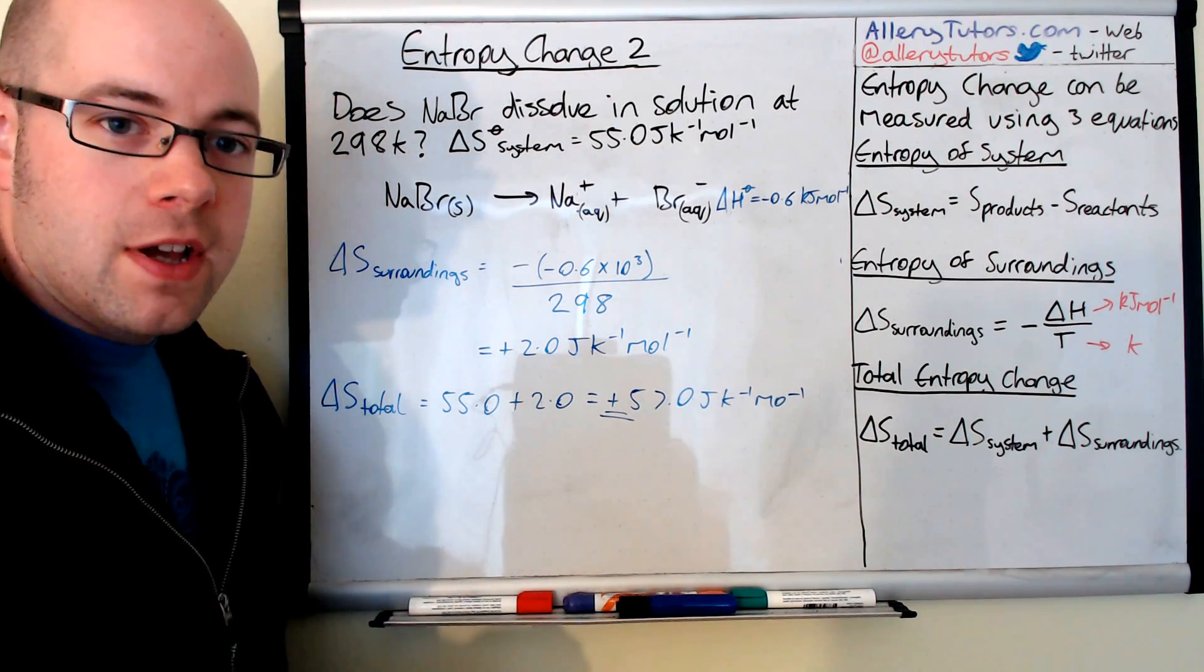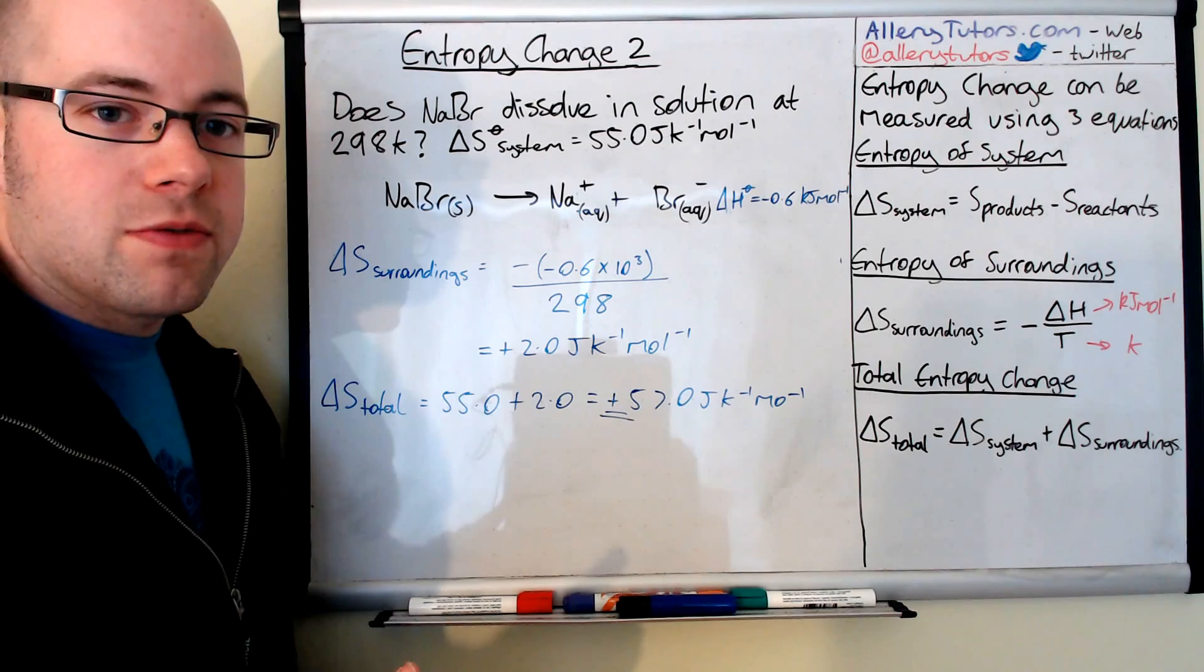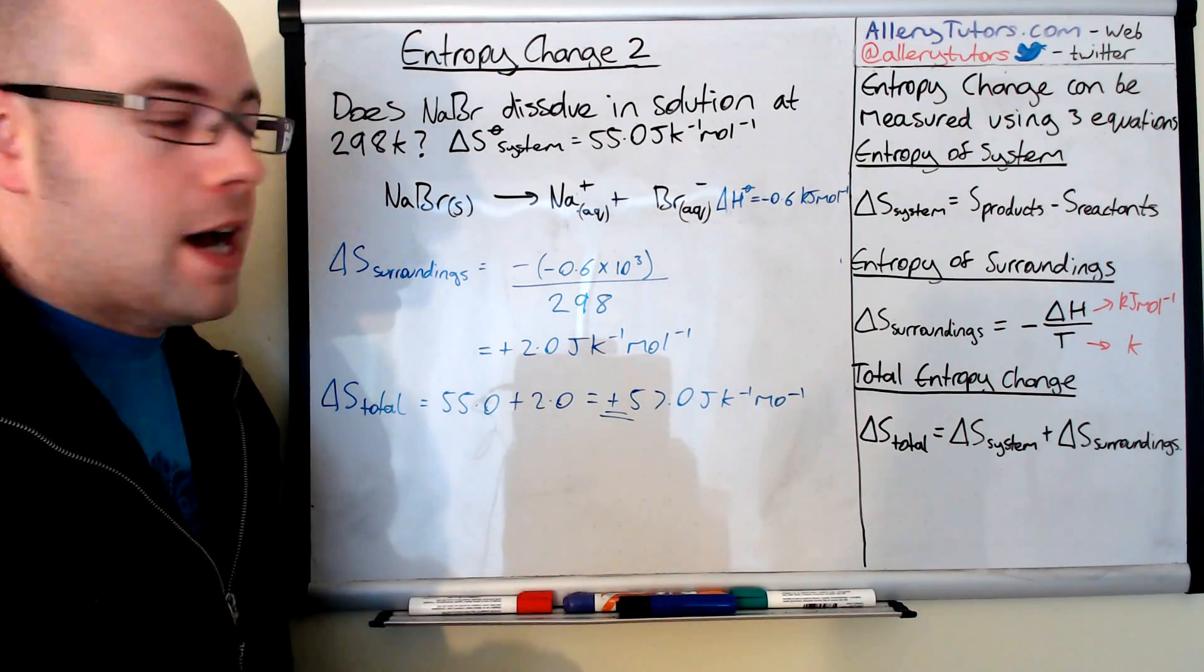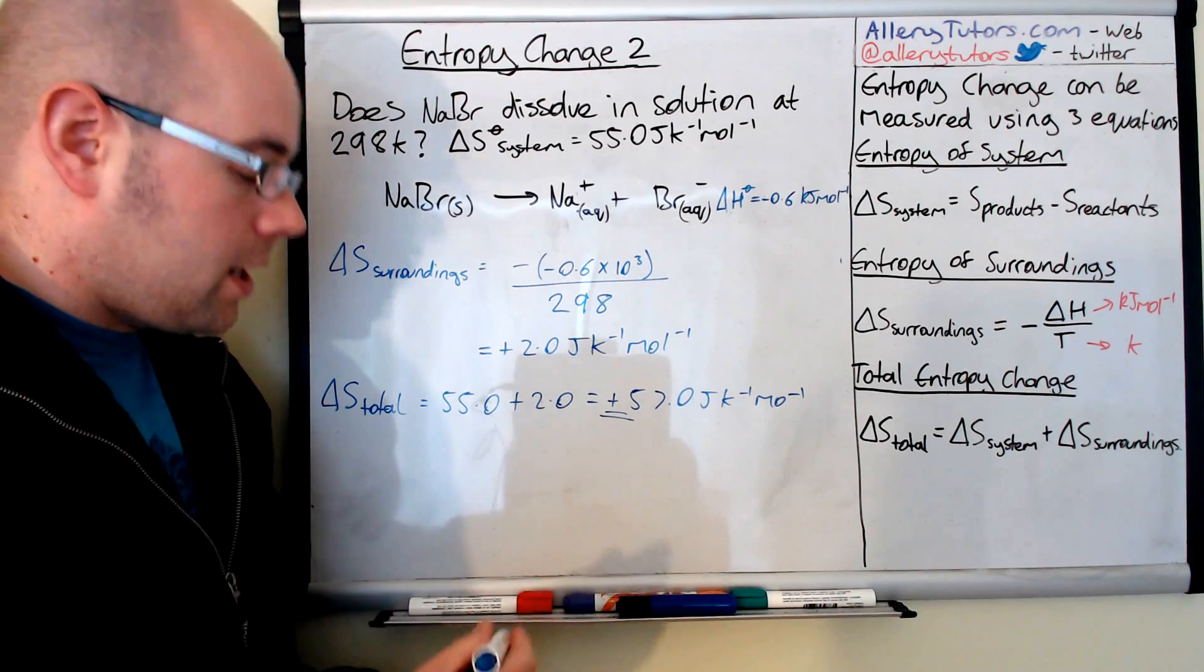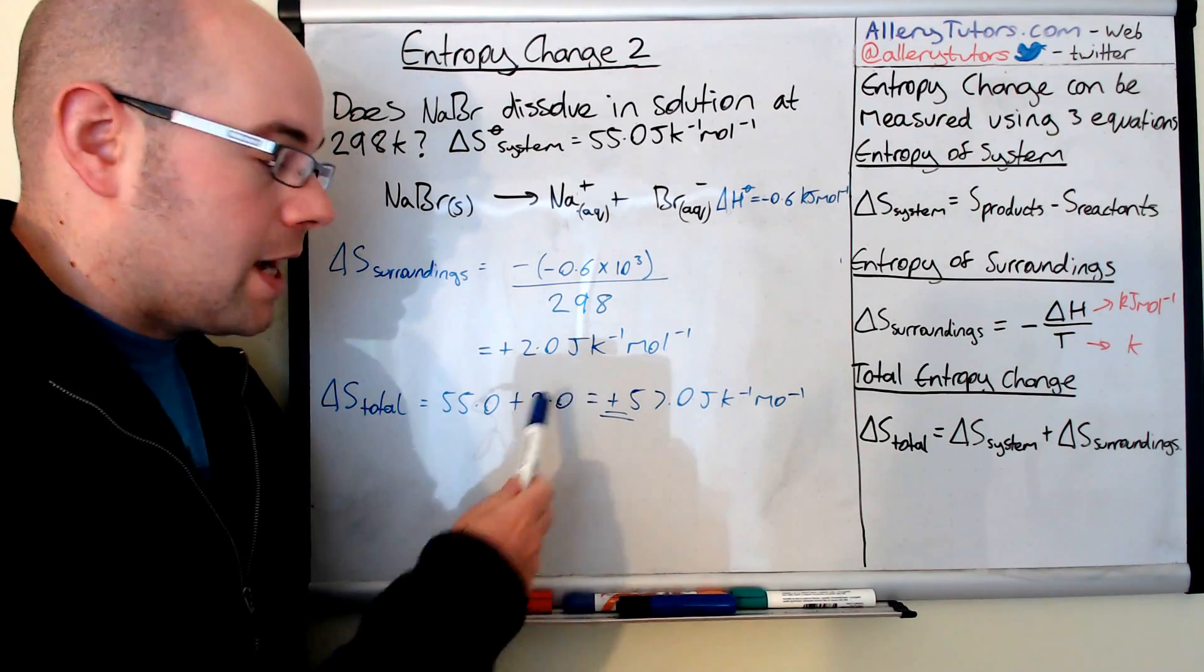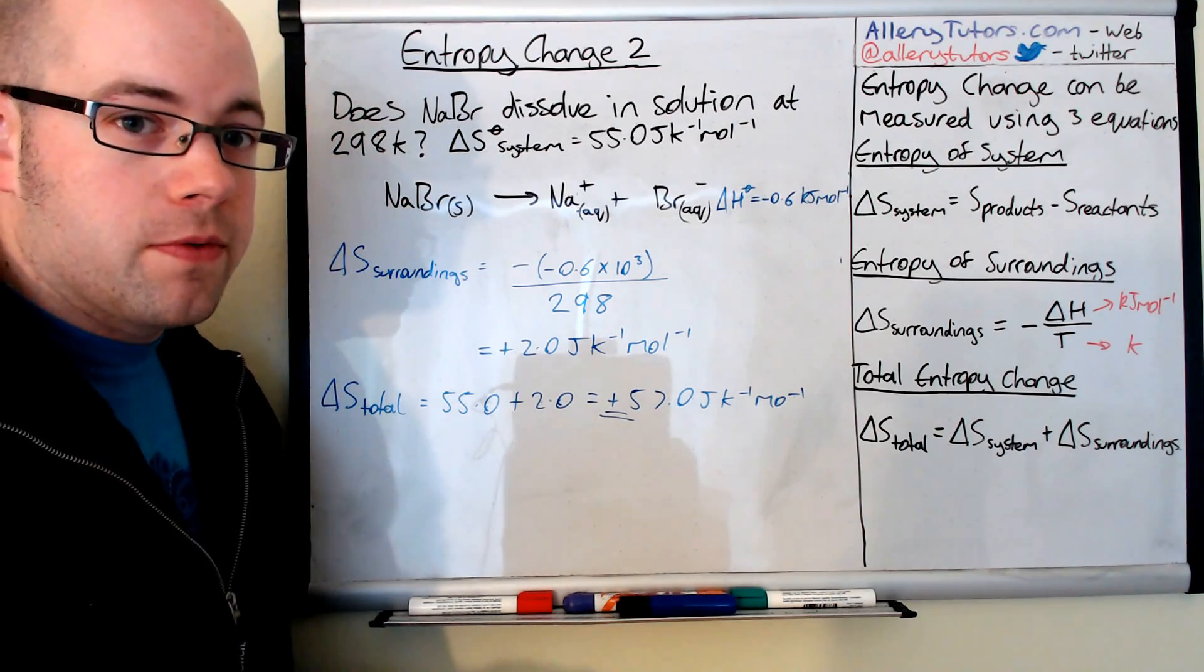If this value was negative, then this tells us that entropically this reaction is not likely to happen at this temperature unless you change the conditions. So at 298 Kelvin, if the value is negative, it means that it won't dissolve at that temperature.